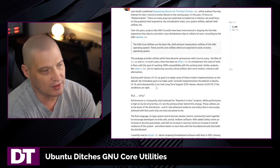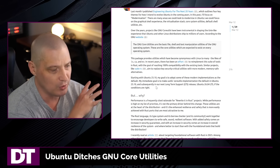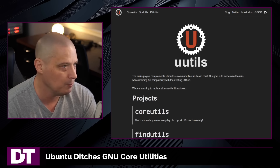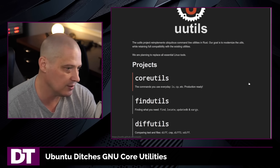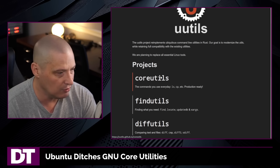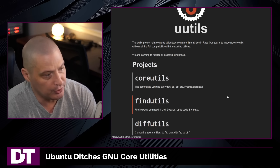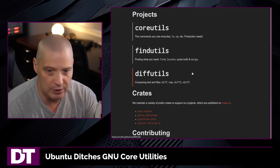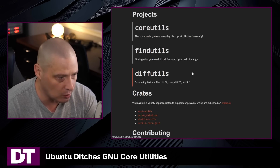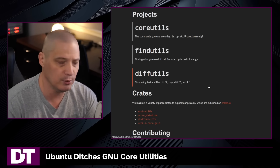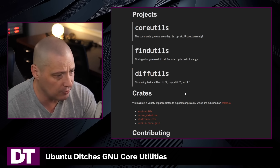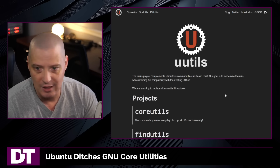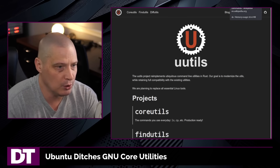He writes that they're wanting to get away from the GNU coreutils and try out this new project called UUtils, which is the Rust rewrite of the coreutils. Also part of UUtils are Rust rewrites of the findutils — your find command and xargs command — the diffutils, which is your diff and compare functions. But the coreutils, of course, are the biggie.